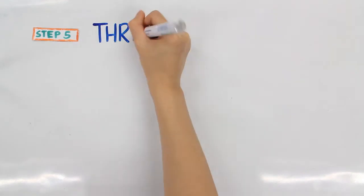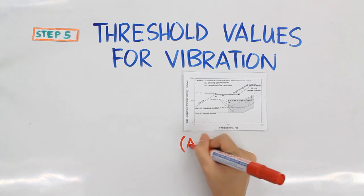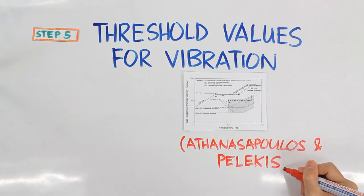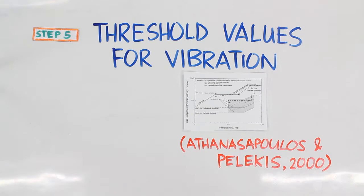Using the chart of threshold values for vibration, we can identify what type of structures are affected at a certain peak particle velocity. And then, just tabulate the results.